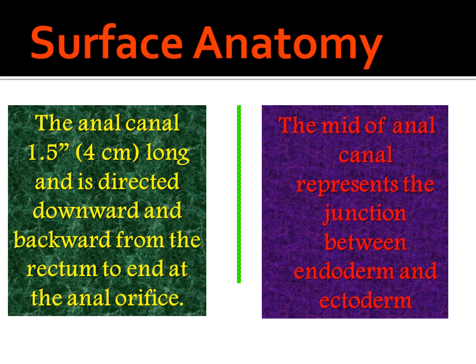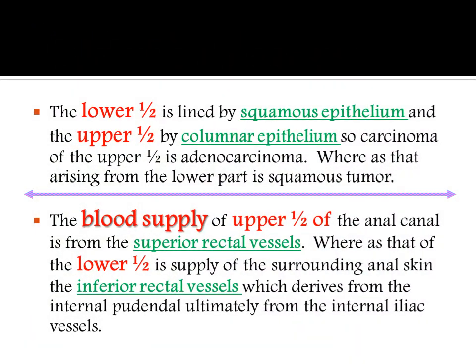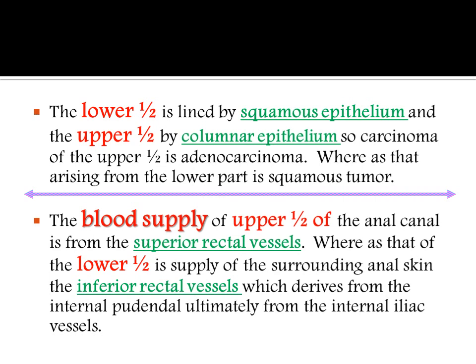The midpoint of the anal canal represents the junction between the endoderm and the ectoderm. We will see the columnar epithelium above this junction. If carcinoma occurs in this upper region, it is known as adenocarcinoma.